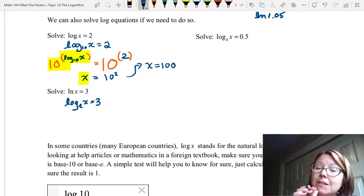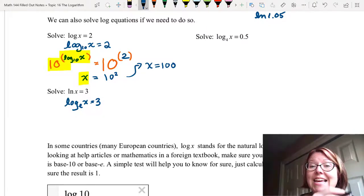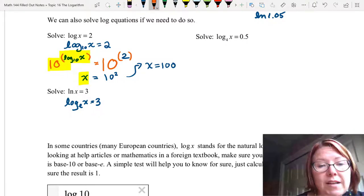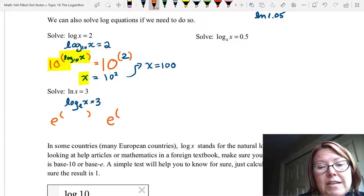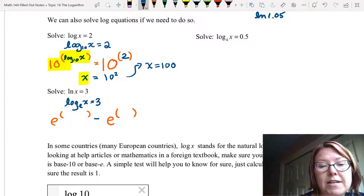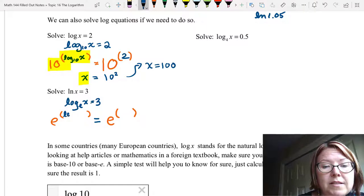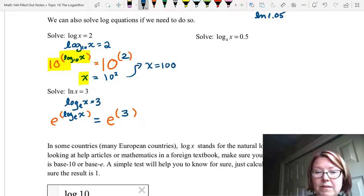We want to exponentiate on both sides. And the inverse of log base e is e to the. So on both sides, I'm going to do e to the and leave a set of parentheses in the exponent. So I'll do an e to the something on the left and an e to the something on the right. On the left inside the parentheses, I'm going to write log base e of x. And on the right, I'm going to put a 3 in the parentheses.